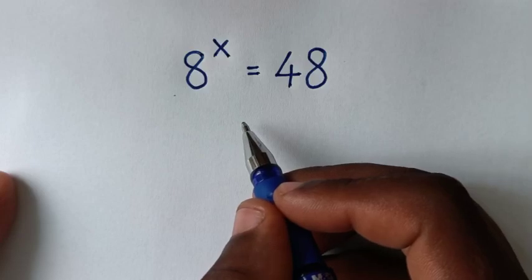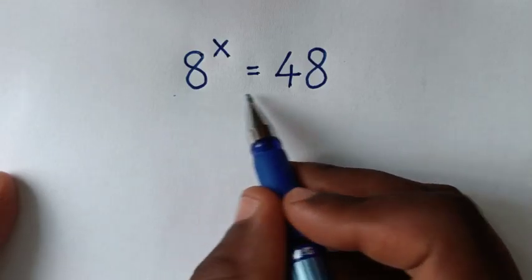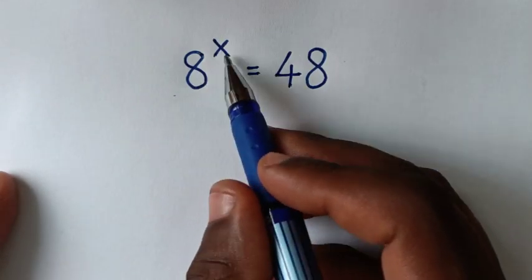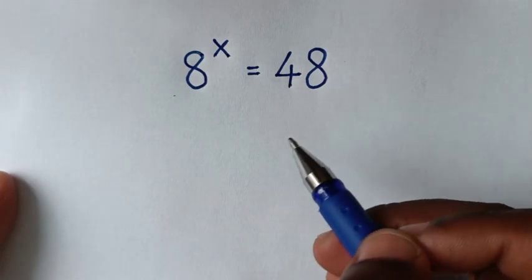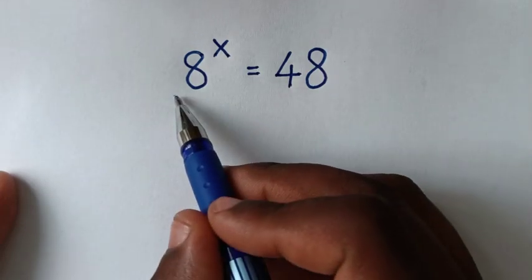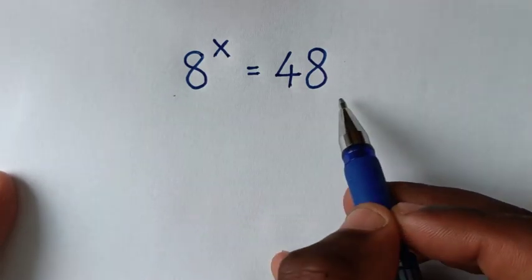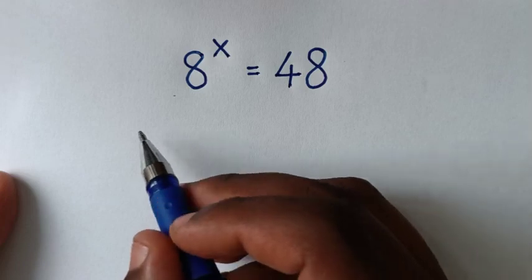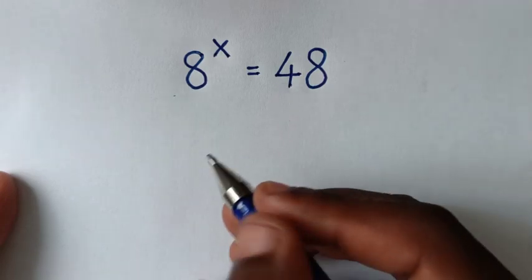Welcome. We are going to solve this math problem: 8 to the power x is equal to 48. We need to find the value of x from this equation. In the first step, we'll apply log on both sides.